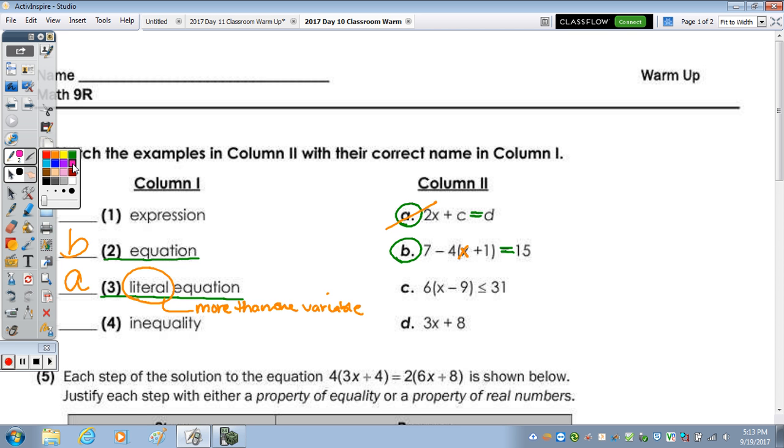The other two are expression and inequality. Well, inequality has the inequal, which means not equal. So the symbol that represents not equal could be the not equal symbol, but could also be less than, greater than, less than or equal to, or greater than or equal to. So since C contains the less than or equal to, that is the inequality. So to finish, D must be the expression, and yes it is. It's just a binomial in this case with the two terms, so it has no equal sign. No equal sign is just an algebraic expression.